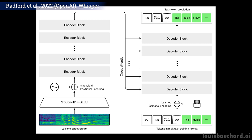It will take the audio recording, split it into 30-second chunks and process them one by one. For each 30-second recording, it will encode the audio using the encoder section and save the position of each word said, and leverage this encoded information to find what was said using the decoder.